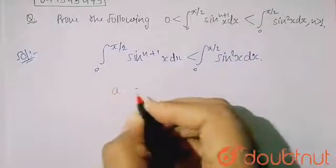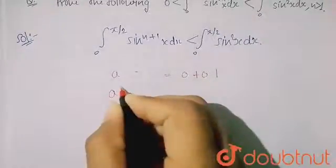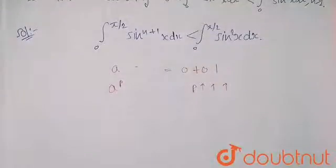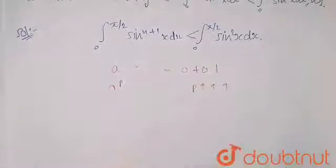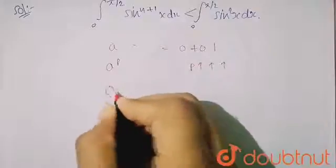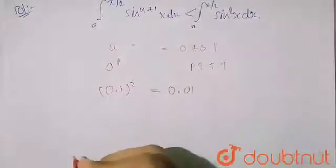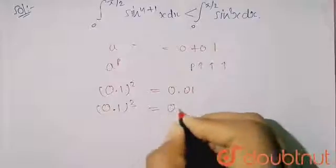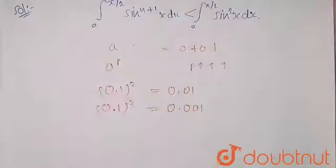If you have a number a from zero to one, and you raise it to a power p, then as you increase p, the value of a^p will decrease. For example, if a = 0.1 and p = 2, the value is 0.01. If you increase p from 2 to 3, the value becomes 0.001 — it is decreasing as p increases.